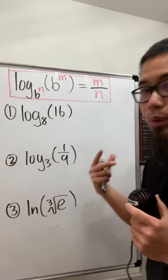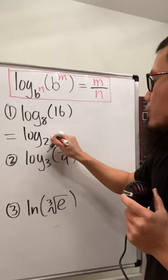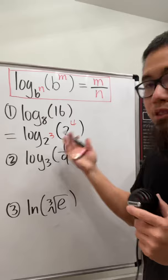So have a look at the first one. We have log base 8, which is the same as 2 to the third power, and for the 16, that's the same as 2 to the fourth power. So the answer is what? 4 over 3. That is it.